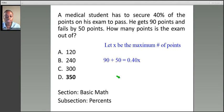So how many points is the exam? Now you can solve for X. 90 plus 50 gives you 140 equals 0.40 times X. Divide both sides by 0.4, and X is 350. The exam was worth 350 points. The correct response is choice D.